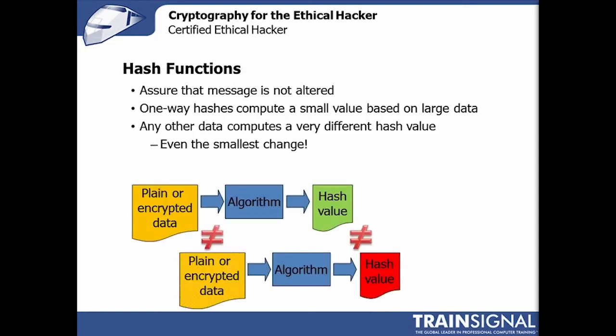Hash functions are an interesting one — they're essentially a thumbprint of a bunch of data. Take a message, a text file, any file, or any giant chunk of data, and run a hash algorithm against it. What you get is a very small result — typically 256 or 512 bytes — that is reasonably unique to the input. Think of it as a thumbprint of the data: any other data is going to leave a slightly different or drastically different thumbprint, but in all likelihood only that same data will result in that same thumbprint.